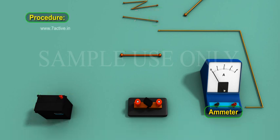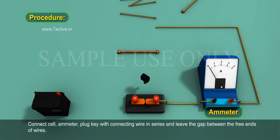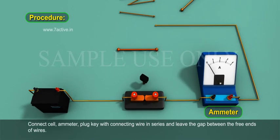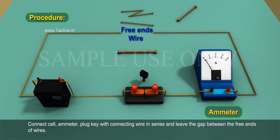Procedure: Connect cell, ammeter, plug key with connecting wire in series and leave the gap between the free ends of wires.